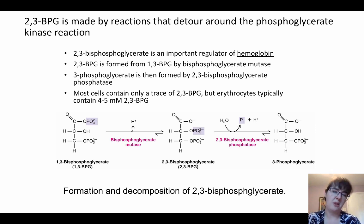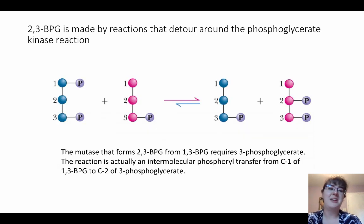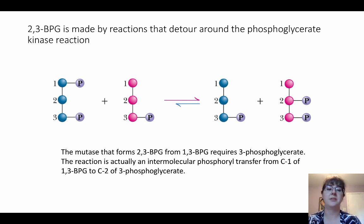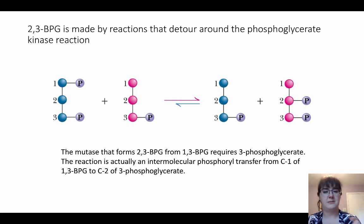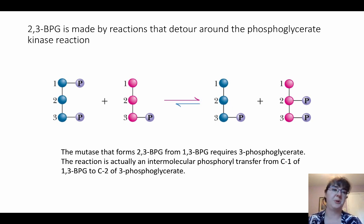Most cells only have a small amount of 2,3-BPG, but erythrocytes — red blood cells — usually have 4 to 5 millimolar. To make 2,3-bisphosphoglycerate, you actually need 3-phosphoglycerate as well. The reaction involves two different molecules: 1,3-bisphosphoglycerate and 3-phosphoglycerate. The mutase is shifting around where the phosphates are, but based on the structure and how everything works, it actually needs two molecules to pull off this reaction.